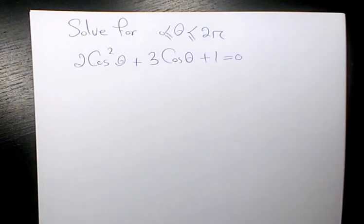What's up guys, this is Massey. Welcome to my channel. In this video I want to show you how to solve this trigonometric equation. The equation I have in this video is 2 cosine squared theta plus 3 cosine theta plus 1 equals to 0.